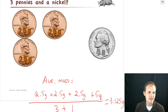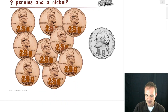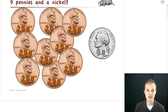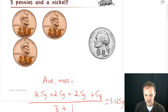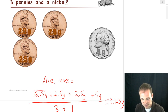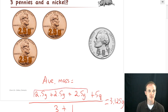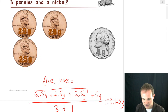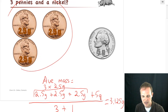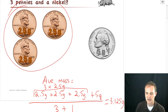This can get a little tedious if you start to get bigger collections. What if we have nine pennies and a nickel? I don't really want to write out 2.5 plus 2.5 plus 2.5 nine times. But 2.5 plus 2.5 plus 2.5 is the same thing as 3 times 2.5 grams — three pennies at 2.5 grams per penny. We're going to use that on the next step.